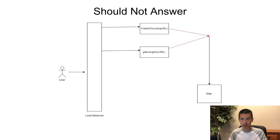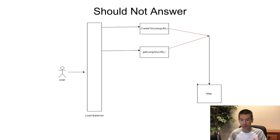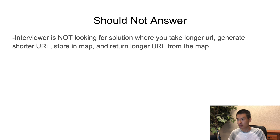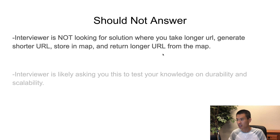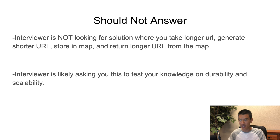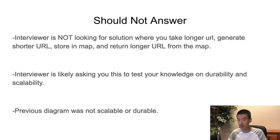Now this simple design — a user connecting to a load balancer with two API endpoints, create and get, hitting a map where the key is the short URL and the value is the original — is not the answer your interviewer wants. The interviewer is asking this question to figure out your knowledge on durability and scalability: once your website gets millions or billions of requests, how efficient will it be? The previous diagram works but it's not scalable nor durable.